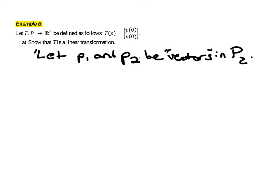Okay, but so we've got these two polynomials, P1 and P2, degree 2 or lower. Now, we need to check whether T of P1 plus P2 is equal to T of P1 plus T of P2. So that would be the first condition to T being a linear transformation.